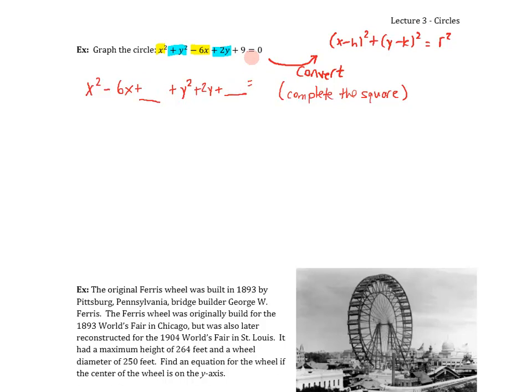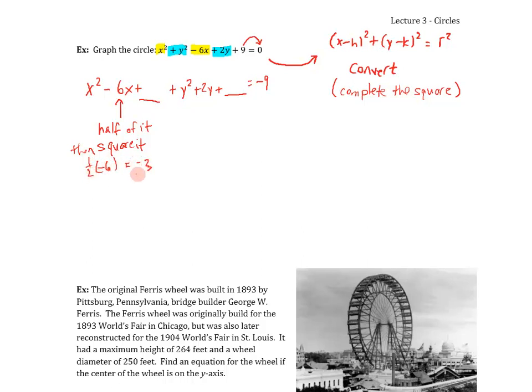Then what we're going to do is take the constant and move it to the other side, making it -9. I'm going to take half of this coefficient, and then square it. What's half of -6? That's -3. And then take -3 and square it, you get 9. I'm going to add that 9 here. But if I add it to one side, I have to add it to the other. Let's do that again. What's half of 2? That gives me 1. Take 1 and square it, I get 1. So I'm going to add 1 to both sides.